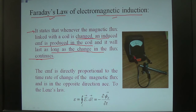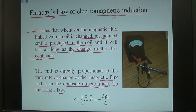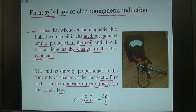What is the mathematical form of Faraday's law? The EMF is directly proportional to the time rate of change of the magnetic flux, and is in the opposite direction according to Lenz's law. So E, that is equal to the closed path integral of E dot dl, is equal to minus del phi_B upon del t.